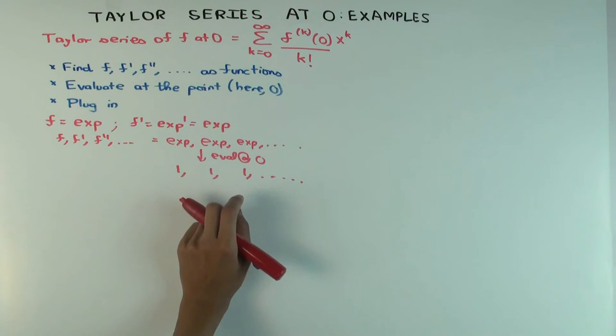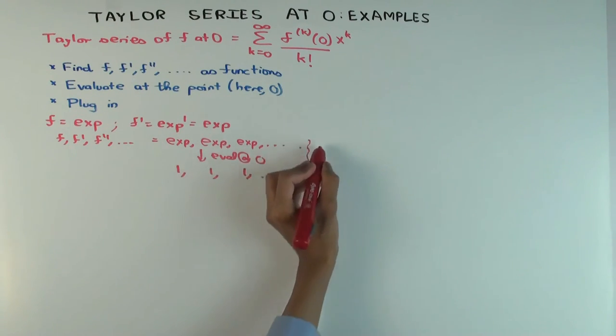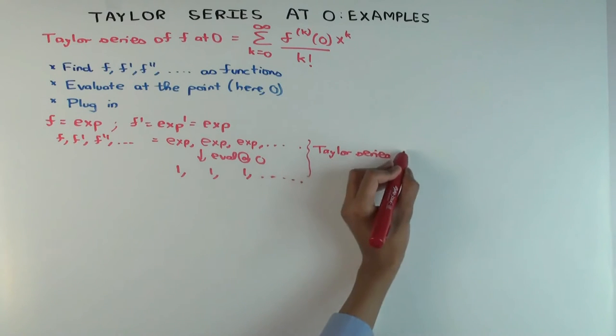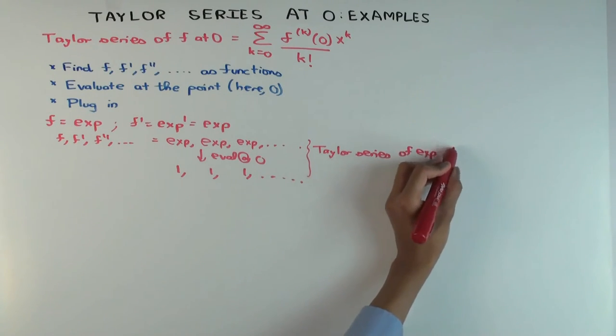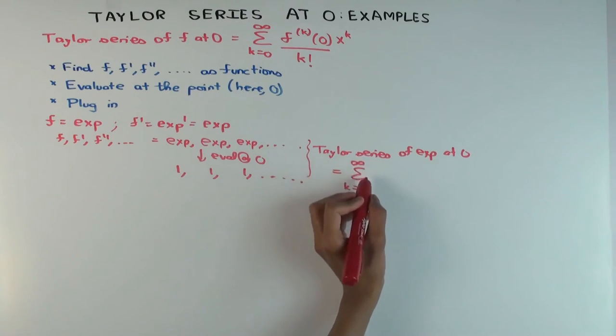Now you can get the Taylor series. From these you can get the Taylor series of the exponential function.